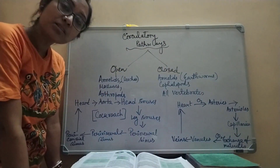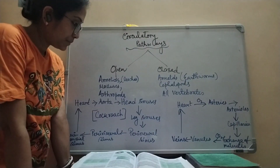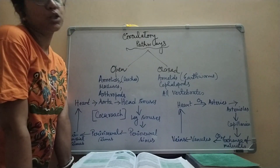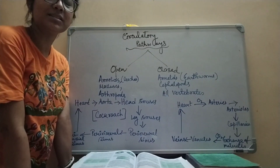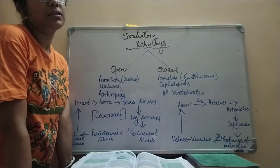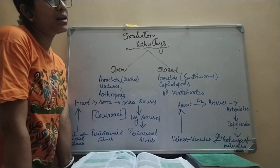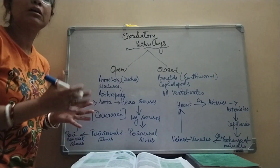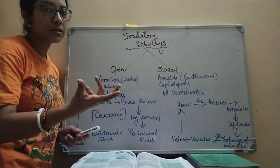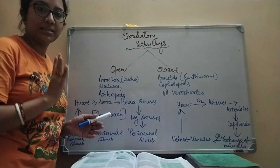The significance of the closed circulatory system: blood takes a shorter time for circulation, which increases efficiency — in short time, a huge amount of material is exchanged. Because arteries possess smooth muscles, they can contract and relax, making it a regulated system. The closed circulatory system can be regulated according to need — arteries can contract or relax as necessary.